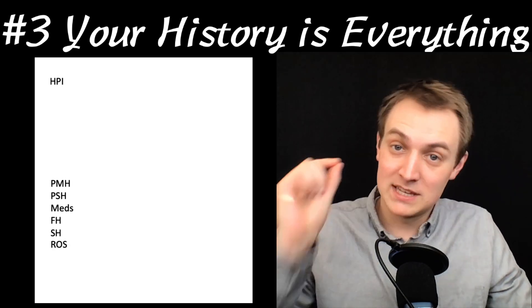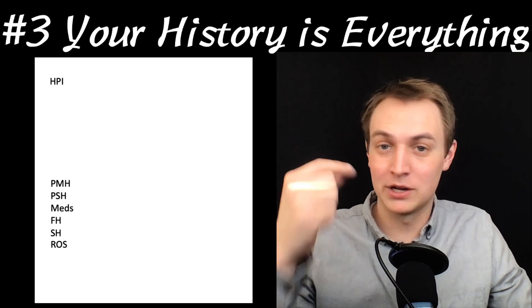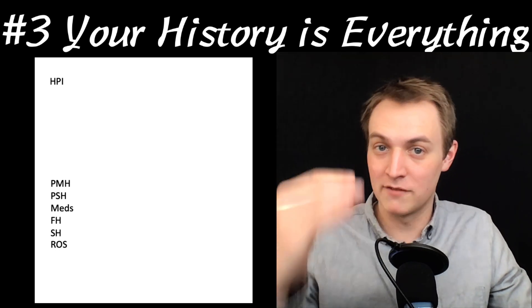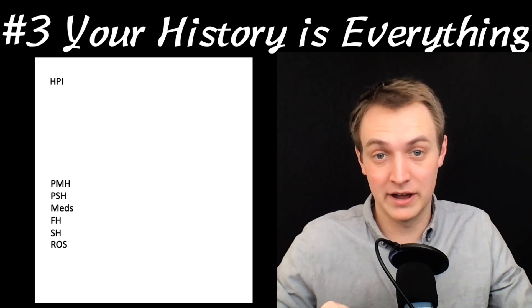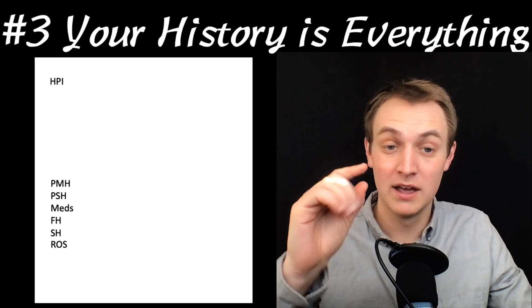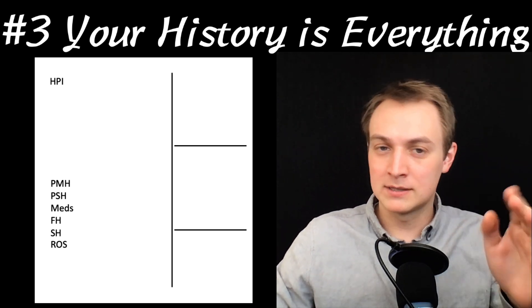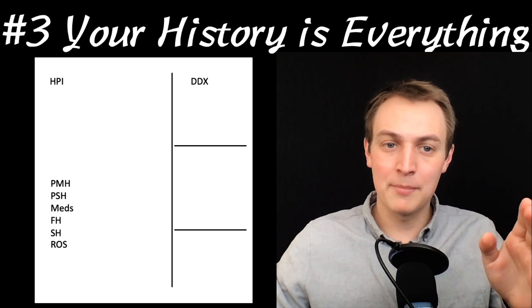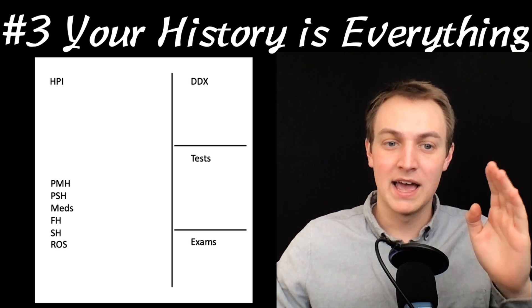And then the review of systems — this is huge. Have a really good review of systems in your head where you're asking at least two or three things for every organ system, because you're going to catch things you missed in your HPI that are really good for a differential diagnosis. That's a really key part of this. Then draw some lines on your piece of paper, and at the top write differential diagnosis, tests, and exams.